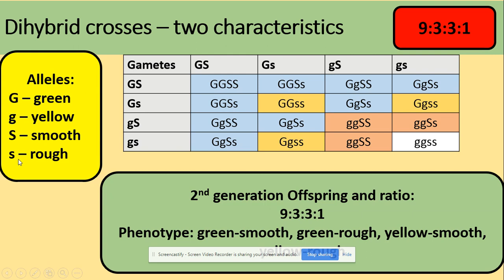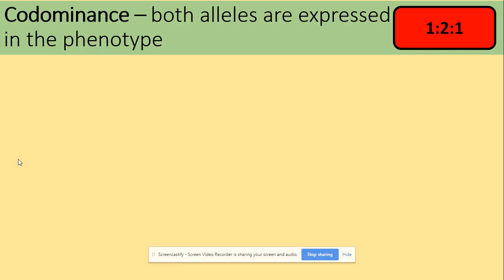So at the end we are getting the ratio nine to three to three to one. That's the dihybrid cross recap for the second generation. So let's get started with codominance.